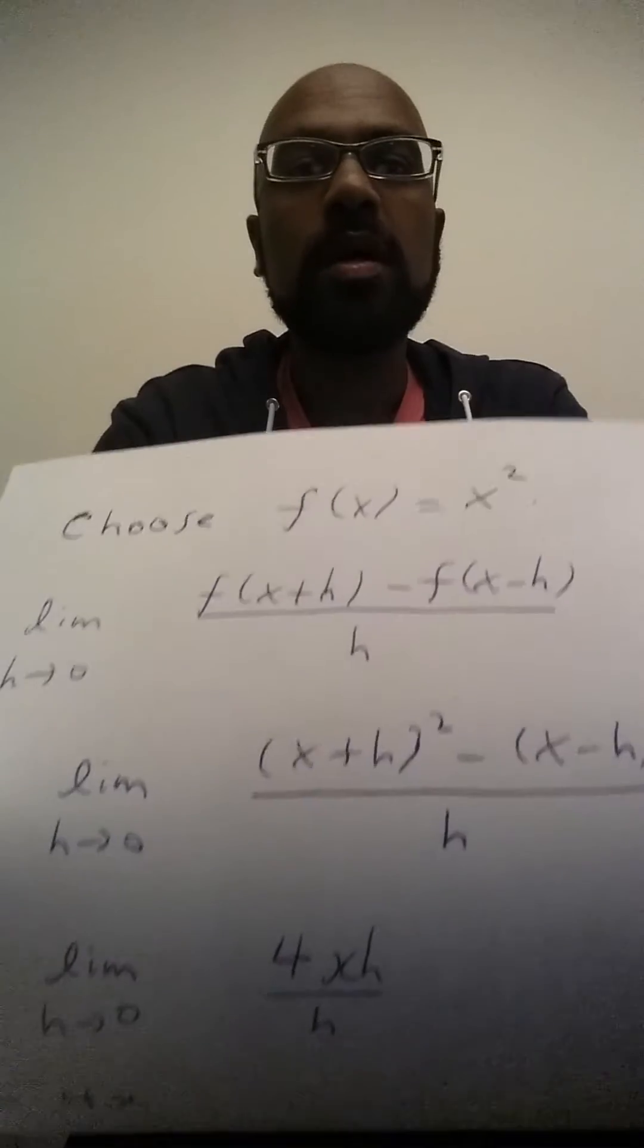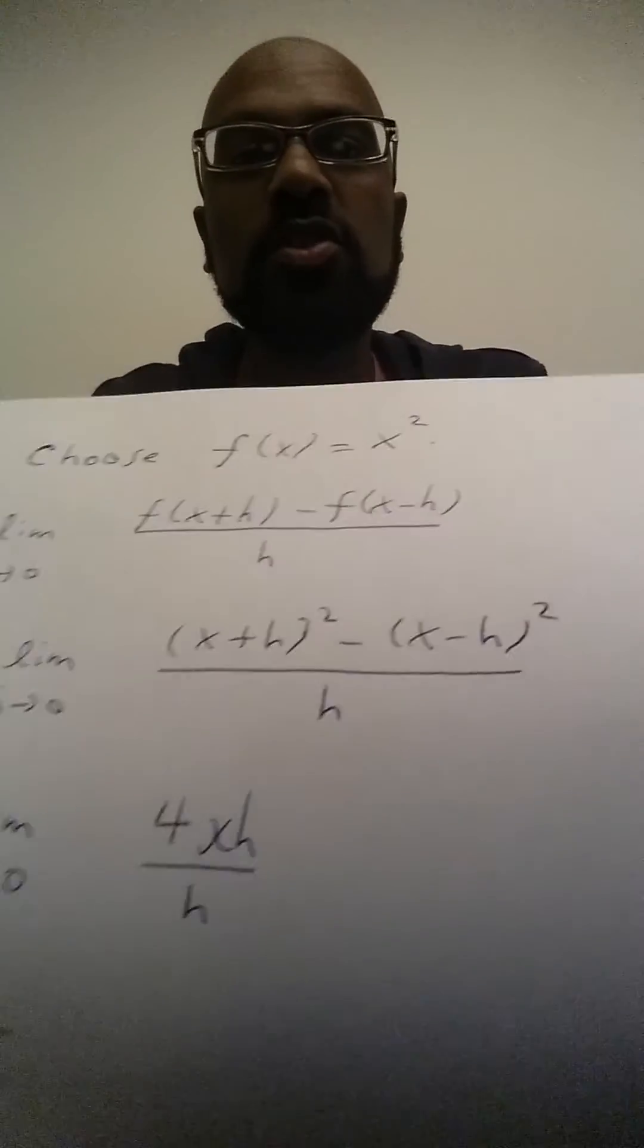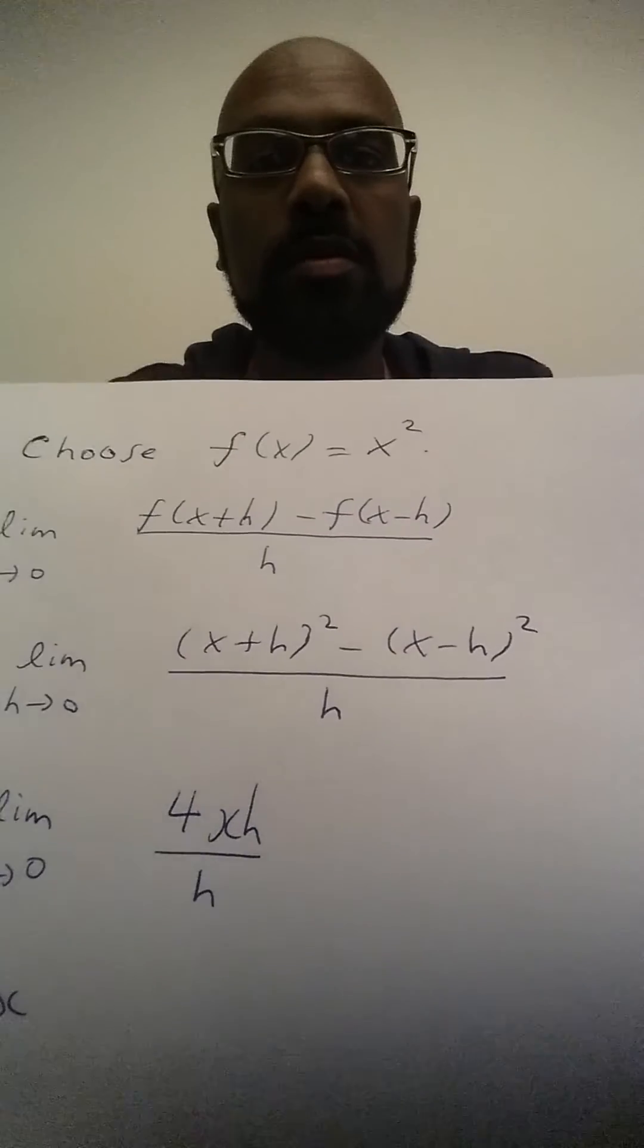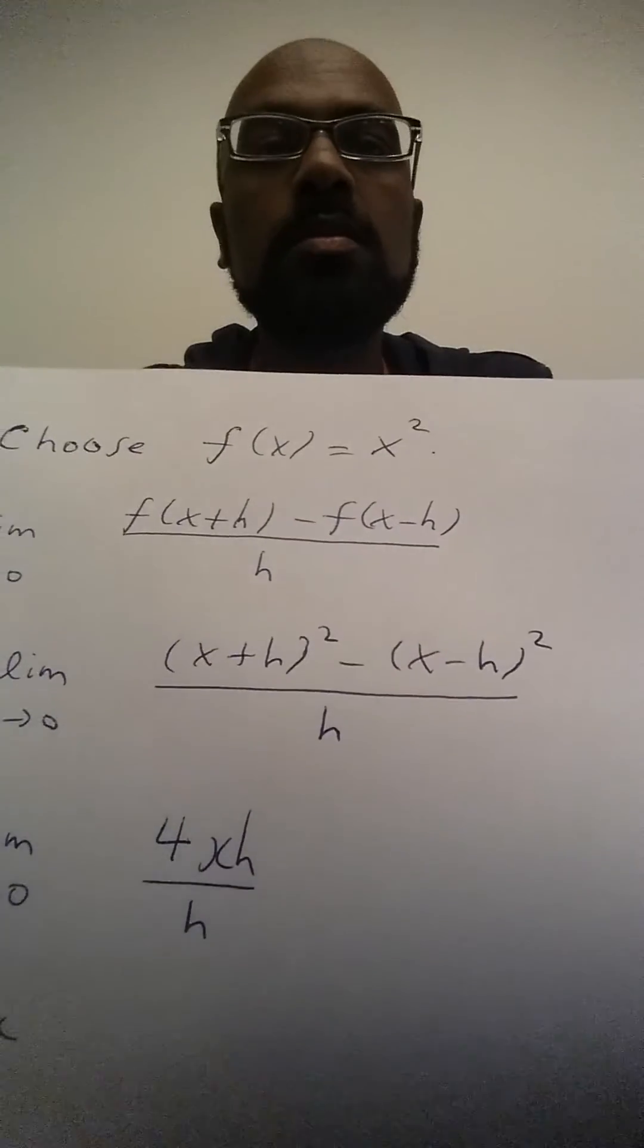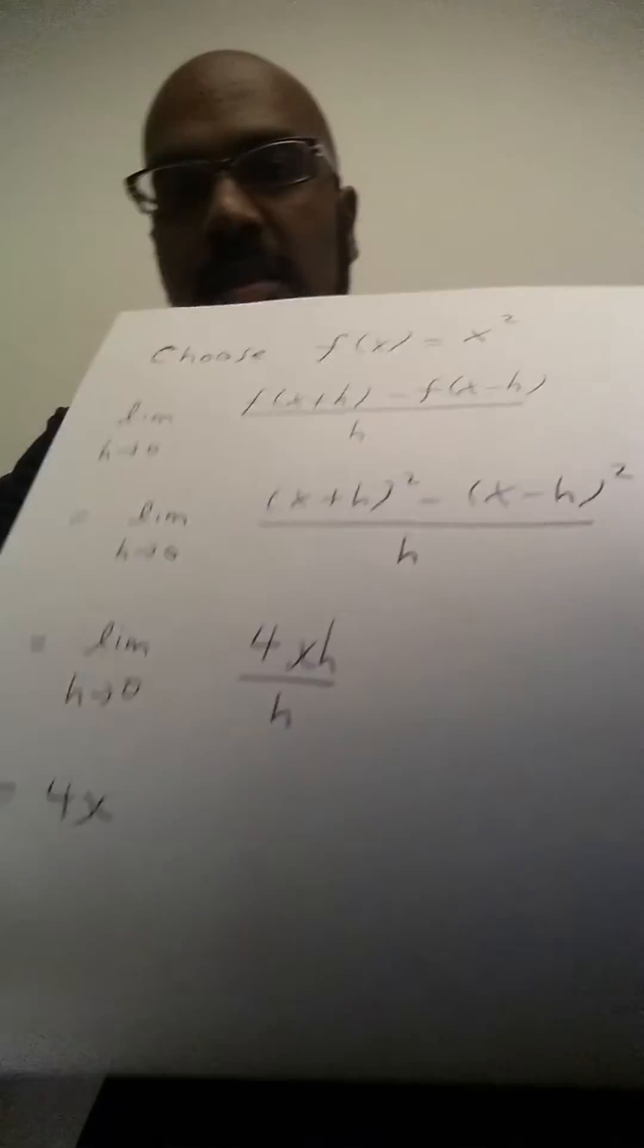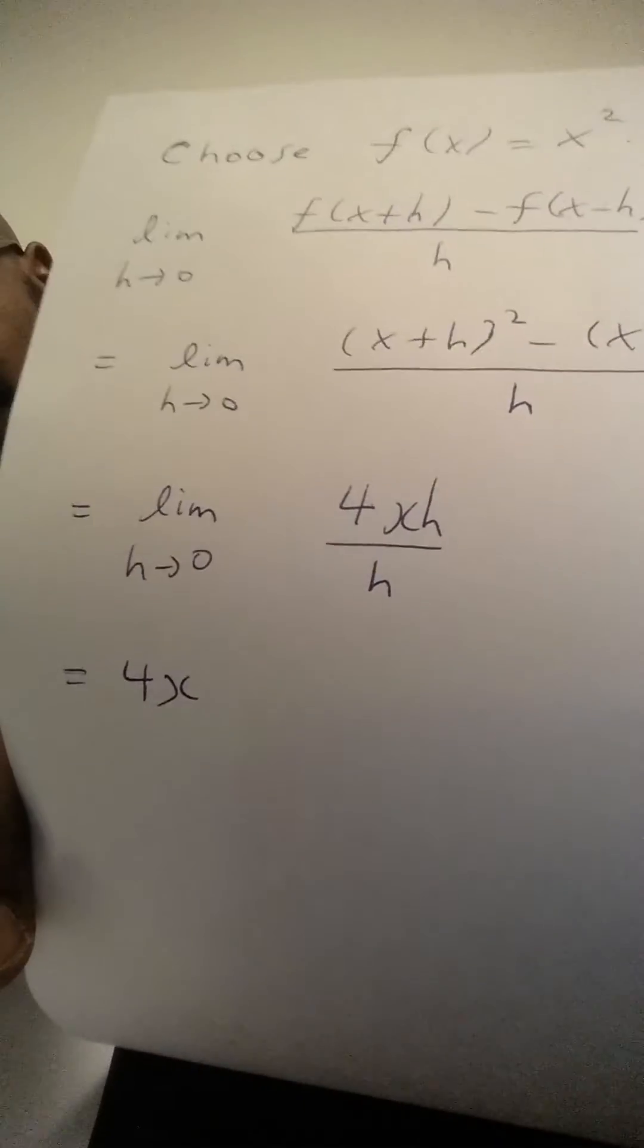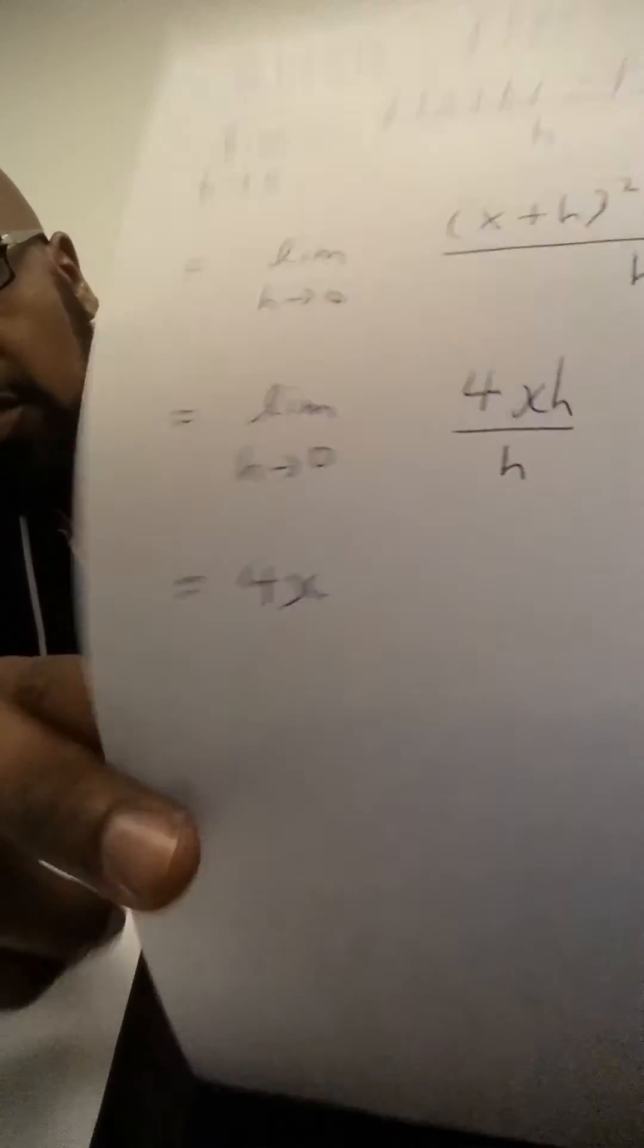So if you actually compute this limit with the function f of x equals x squared, we'll do the substitution, we get some quadratics on the numerator here in x and h. And you simplify this, you're left with the limit as h over 0 of 4x h over h, which is 4x.